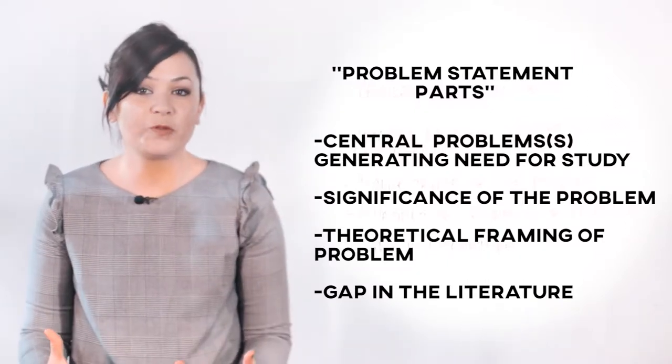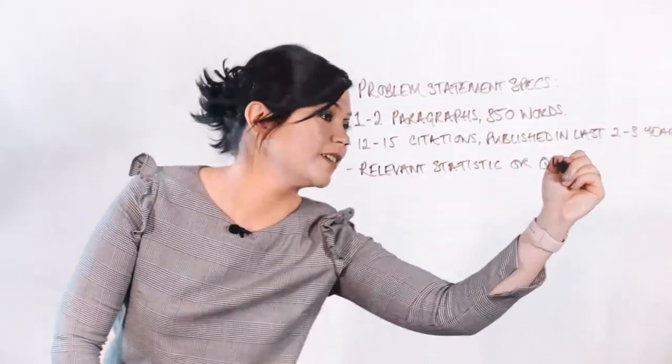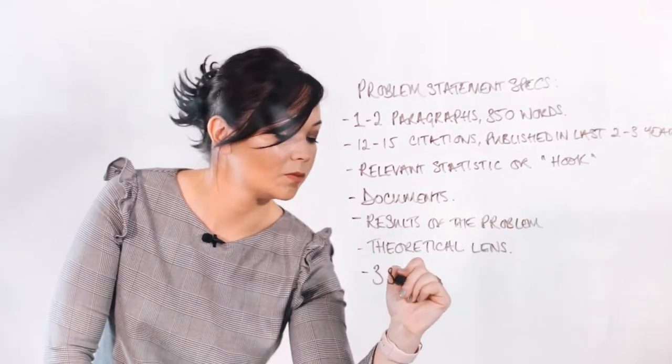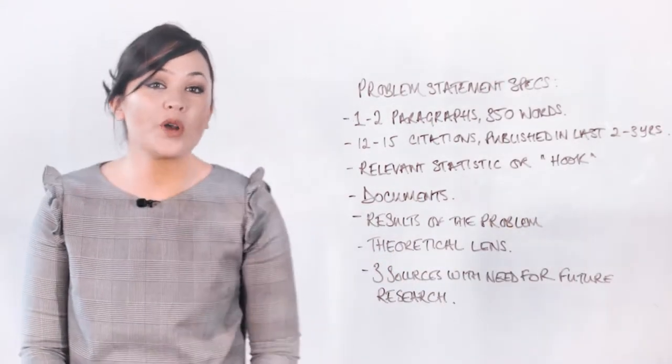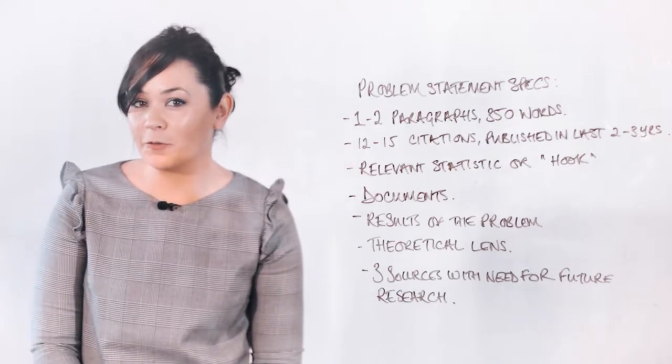Given these four jobs that the problem statement does, you might think that the problem statement is very long. Actually, it competes with the purpose and research questions for shortest section in the whole dissertation manuscript. It does this by being the most efficient. It's comprised of one or two paragraphs, usually two, and it contains about 350 words.